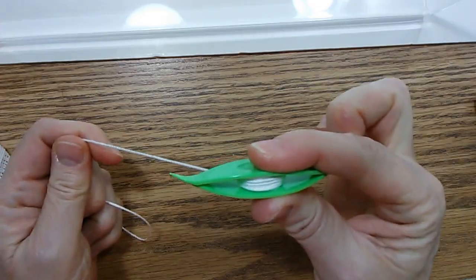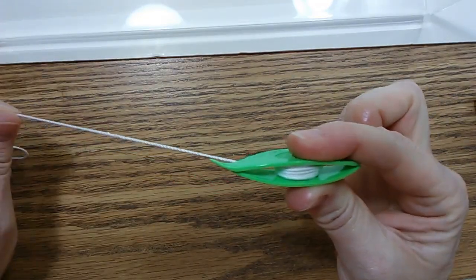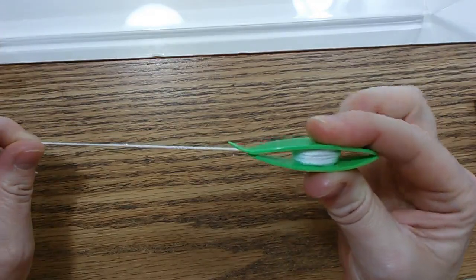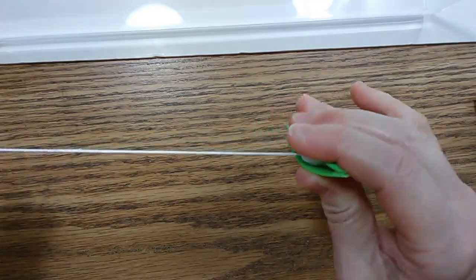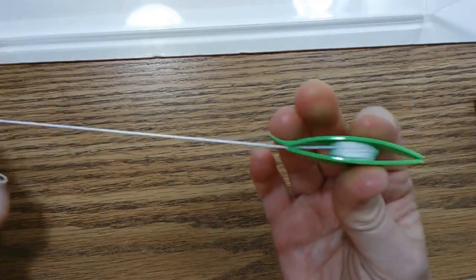I hold the shuttle this way. The thread, the way I tat, needs to be able to come off like this.